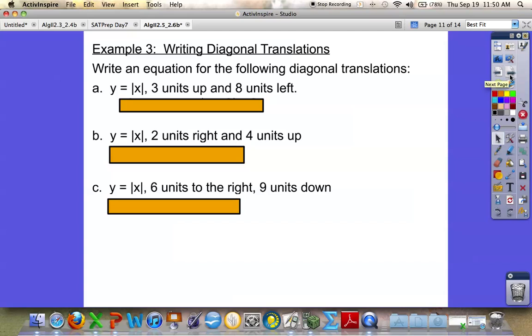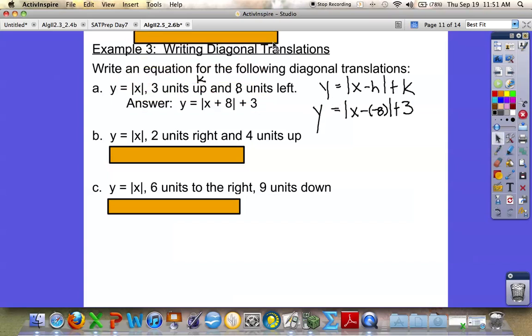They will ask you to write an equation. And all you have to remember is that y equals the absolute value of x minus h plus k is your formula. So if we're saying 3 units up, is up an h or a k value? Up is a k value. So you would put the 3 on the outside. And 8 units left, an 8 left shift is a negative 8 move. But remember, you have to put x minus h. And a minus a negative will actually give you a positive 8. So you would have y equals the absolute value of x plus 8 plus 3.